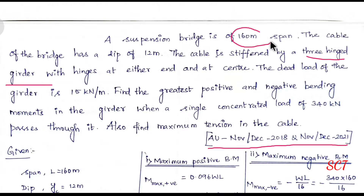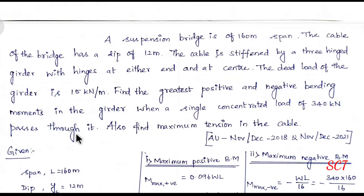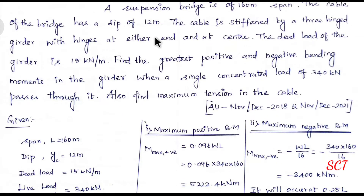The suspension bridge has a span of 160 meters, so L = 160 m. The cable has a dip of 12 meters, so Yc = 12 m. The cable is stiffened by a 3-hinged stiffening girder with hinges at either end and at the center.